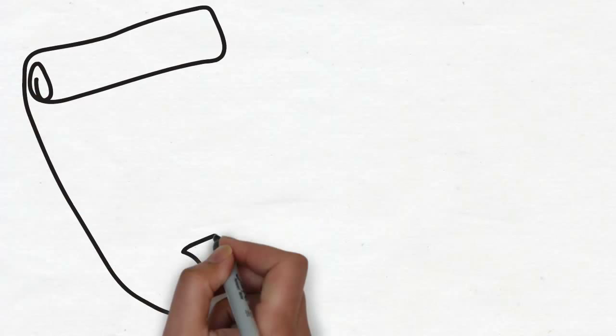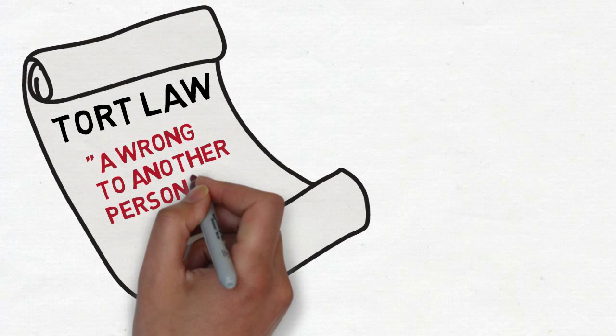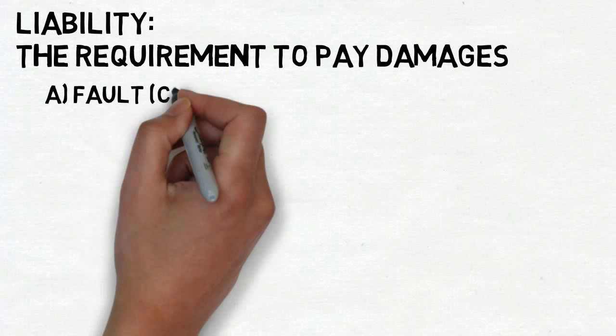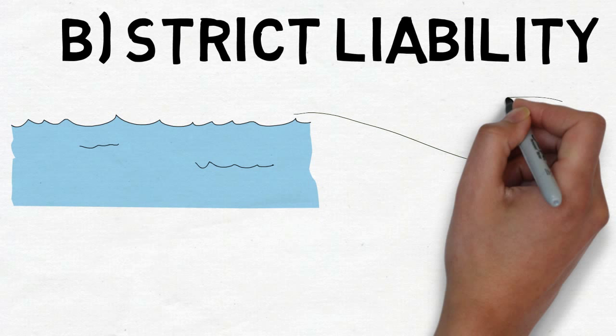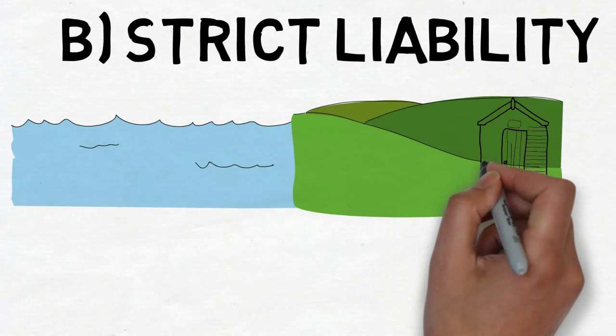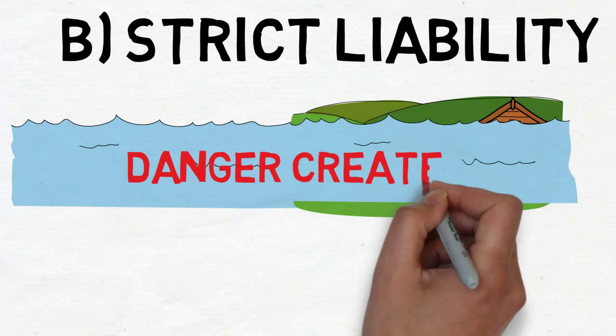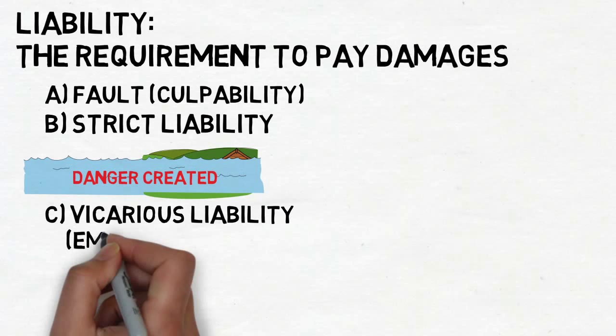Next, we'll be looking at Tort Law. A tort can be defined as a wrong to another person. Liability is the requirement to pay damages. The first type is fault liability — for example, when a janitor was at fault for not posting a wet floor sign that caused an injury. Second, strict liability — using the Rylands v. Fletcher example: Rylands had a reservoir next to Fletcher's property, which had a mine. Rylands' reservoir leaked water into Fletcher's mine, ruining it and creating a danger, making him liable. Third, vicarious liability — when an employer is responsible for the actions of their employees.